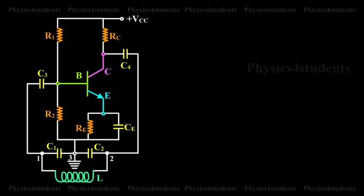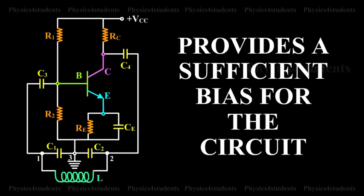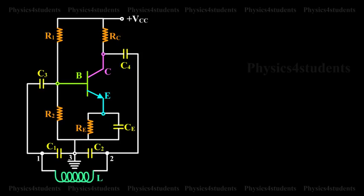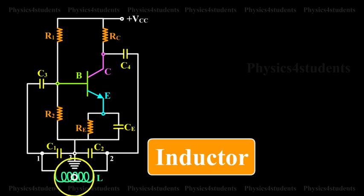The circuit diagram of Colpitt's oscillator is shown in the animation. The resistances R1, R2 and RE provide the sufficient bias for the circuit. The frequency determining network is the parallel resonant circuit consisting of capacitors C1, C2 and the inductor L.